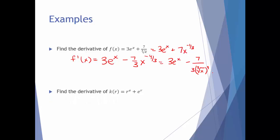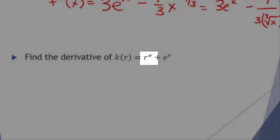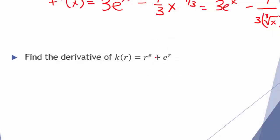For the next example, find the derivative of k of r equals r to the e plus e to the r. I've purposely put this one in because it tests a few concepts. First: do you understand function notation? k as a function of r tells me r is my variable — r is the variable, which means e is a constant. We also have to know the difference between variable in the base versus variable in the exponent.